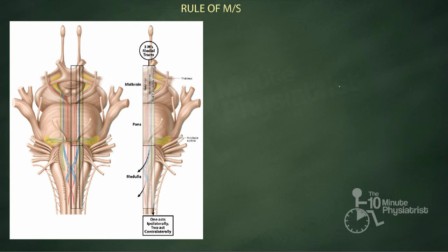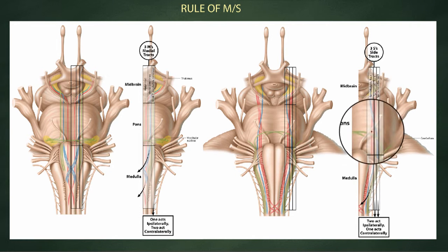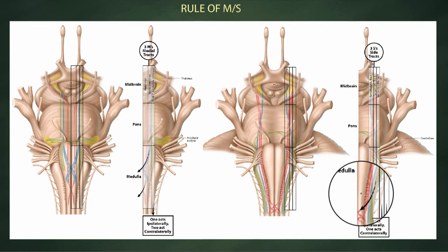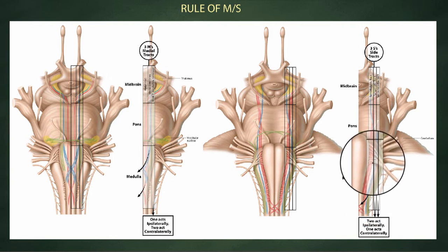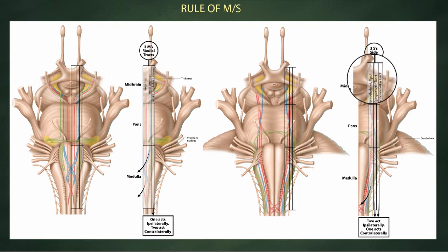So that's the rule of M of our MS. If we add to that the side tracts or the lateral tracts, there are also three lateral tracts. The first is the spinothalamic tract, which ascends, it's indicated here in blue, ascends from the periphery up through the spinal cord and to the thalamus.